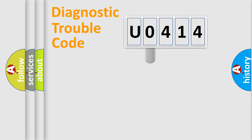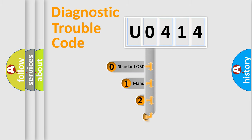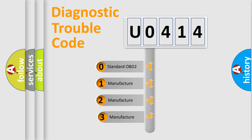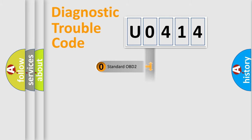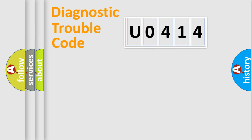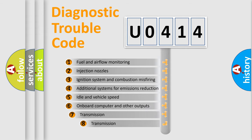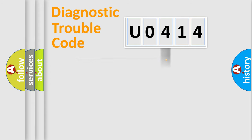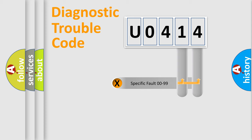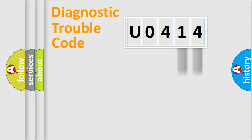This distribution is defined in the first character of the code. If the second character is expressed as zero, it is a standardized error. In the case of numbers 1, 2, or 3, it is a manufacturer-specific error. The third character specifies a subset of errors. This distribution is valid only for the standardized DTC code, and only the last two characters define the specific fault of the group.